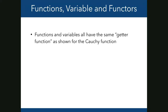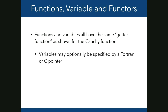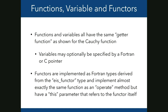Functions and variables use the same getter function form. Variables take no parameters and may optionally be specified by giving a Fortran or C pointer, so rather than having a whole function just to return a value, you can just point to where the variable is stored. Functors are implemented as Fortran types derived from the ICE functor type, implementing an operate method with the derived type as the first parameter — a fairly standard Fortran object-oriented approach.